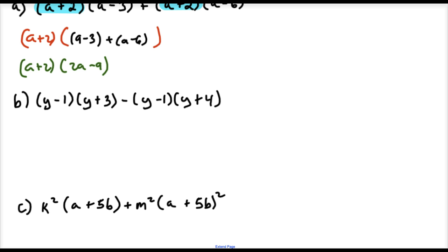For example B, let's see. Y minus 1, Y minus 1. So they both have a Y minus 1 in common. So now we're going to factor out the Y minus 1. So Y minus 1. I'm going to factor that out. Now what's going to go back inside the parentheses? Y minus 1 times what gives me back this? Well, that's just Y plus 3.